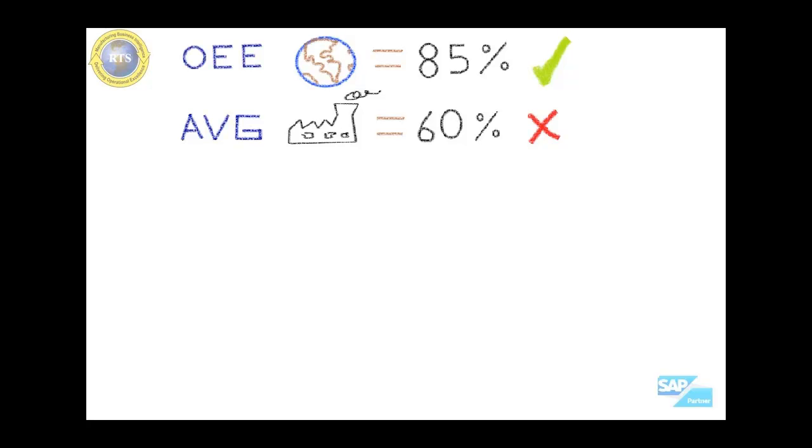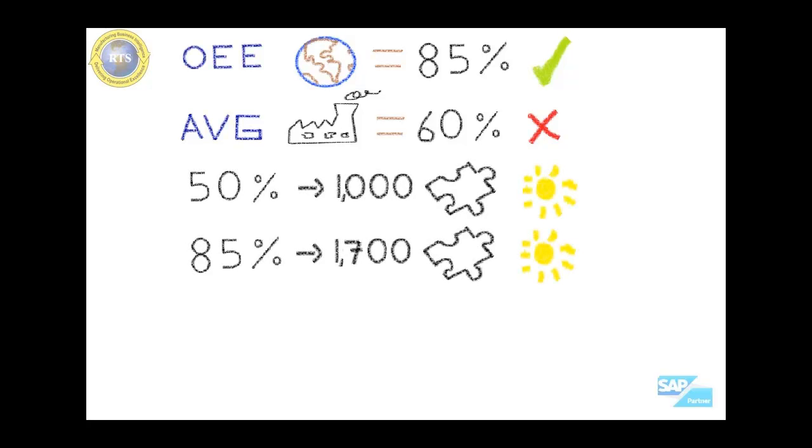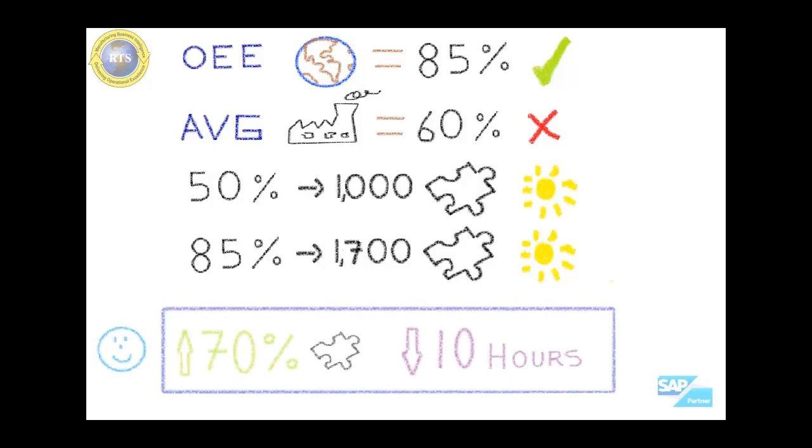Here is an example. Having an OEE of 50%, a plant produces 1000 pieces per day. If the OEE score was to increase to 85%, the same plant, without any capital investments or additional labor, can produce 1700 pieces per day. It means that there is an increase in throughput of 70%, or a reduction of 10 hours of production time.